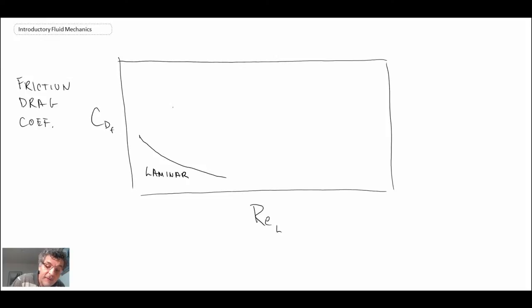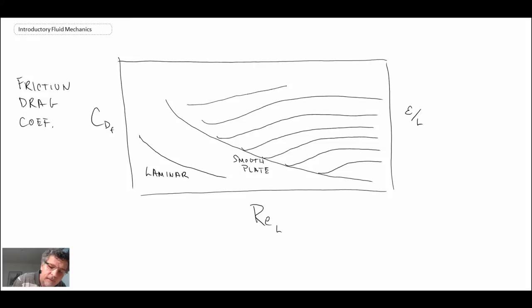But we have the laminar curve. We'll have a smooth plate curve. And then you can have wall roughness in your plate. And that is quantified by epsilon over L, where L is the length of the plate. And just like with the Moody diagram, we'll have these increased curves that at a certain Reynolds number, they become asymptotically flat. And so that's something that you can look up in tables. But this would be data for a rough plate.